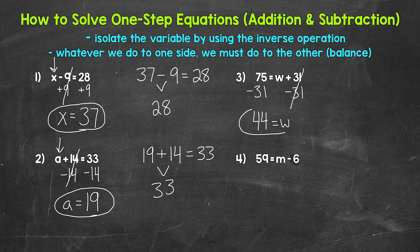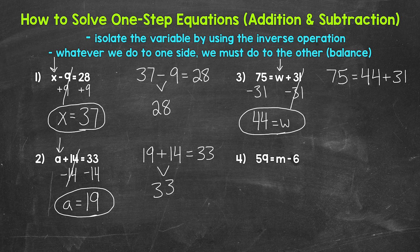So W equals, and then on the left side of the equation, 75 minus 31 equals 44. So W equals 44 — that's our solution. Let's check that by plugging 44 in for W: 75 equals 44 plus 31. 44 plus 31 is 75, so we are correct. W equals 44.